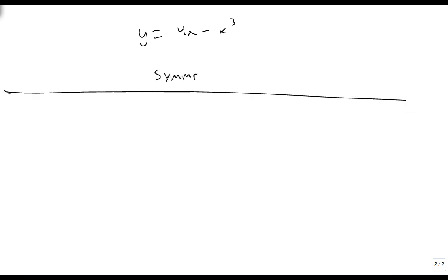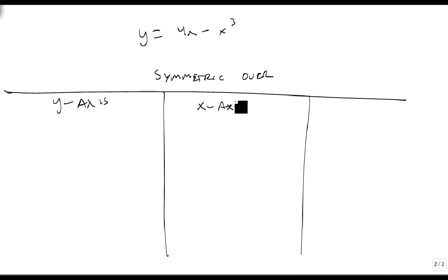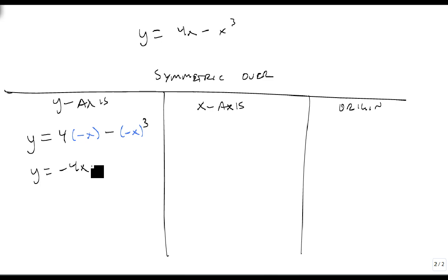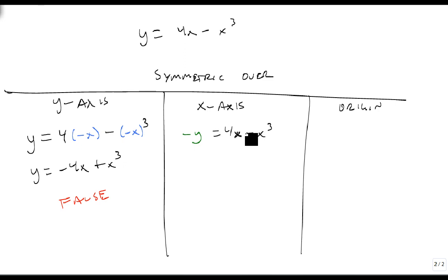We'll break y = 4x - x³ into tests for the y-axis, x-axis, and origin. For the y-axis, wherever we see an x we replace it with -x. We get 4(-x) = -4x and -(-x)³ = -(-x³), which becomes +x³. This is not the same as the original, so this is false — not symmetric over the y-axis. For the x-axis, we get -y = 4x - x³. This is also false — it is not symmetric over the x-axis.